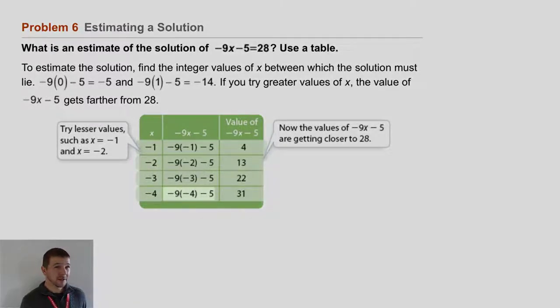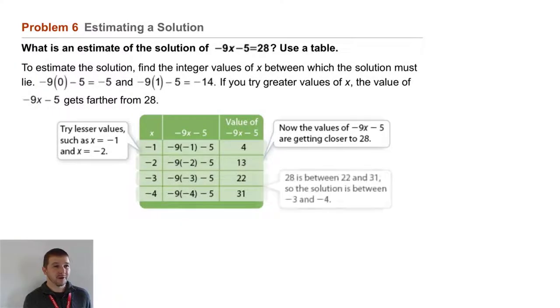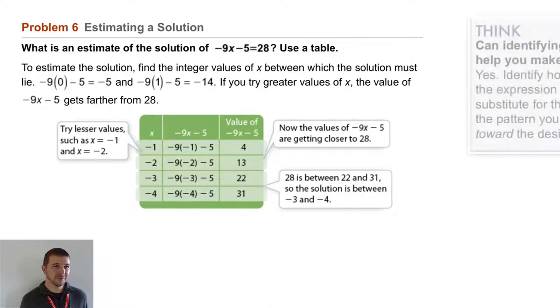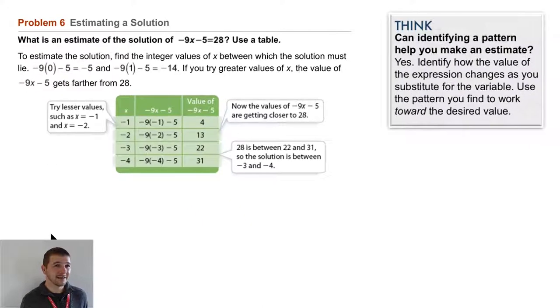If we plug in -4, we get 31. Now we've gone too far. So our correct value, our solution, must be between -3 and -4. So we can state that. The solution is between -3 and -4, and that's our estimate.